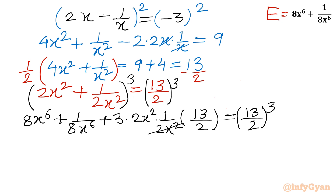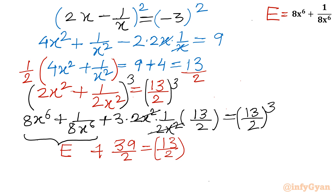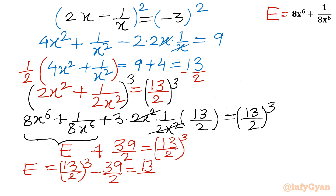Cancelling the 2x² · 1/(2x²) term, which equals 1, the 3ab(a+b) term becomes 3 · (13/2) = 39/2. So E = (13/2)³ − 39/2. Taking 13/2 common: E = (13/2)·[(13/2)² − 3] = (13/2)·[(169/4) − 3]. Taking LCM: (169 − 12)/4 = 157/4.